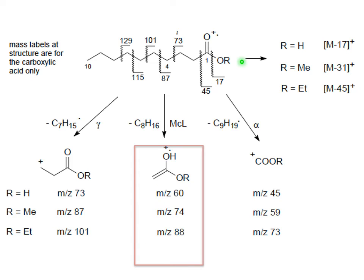This McLafferty rearrangement is a very common marker for carboxylic acids and their esters. When you have an ester fragment — oxygen, double-bond oxygen, then something — and you have cleavage, you have a series of McLafferty peaks at m/z 60, 74, and 88: these correspond to the hydrogen, methyl, and ethyl in the R position. Alternatively you have alpha cleavage giving 45, 59, 73, and gamma cleavage giving 73, 87, and 101.